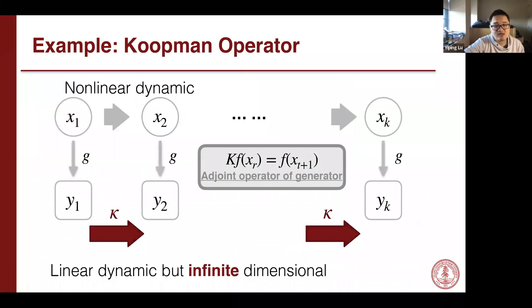The Koopman operator is also an infinite dimensional operator and linear in nature. So the Koopman operator is also a natural example of our theory. The Koopman operator was also part of Yusef's talk last year on importance sampling.